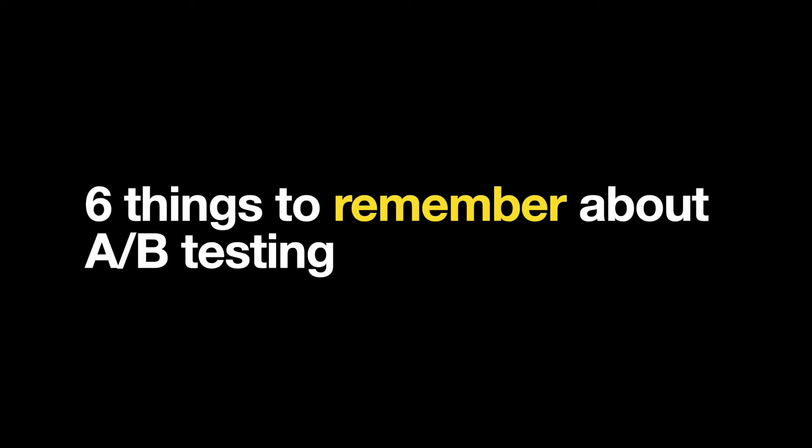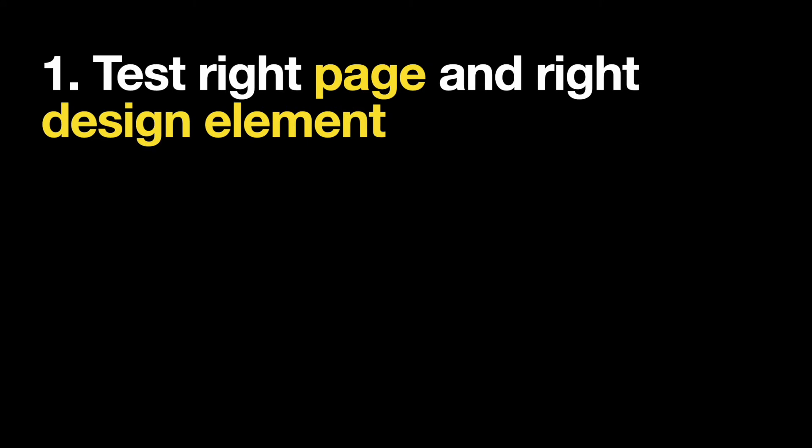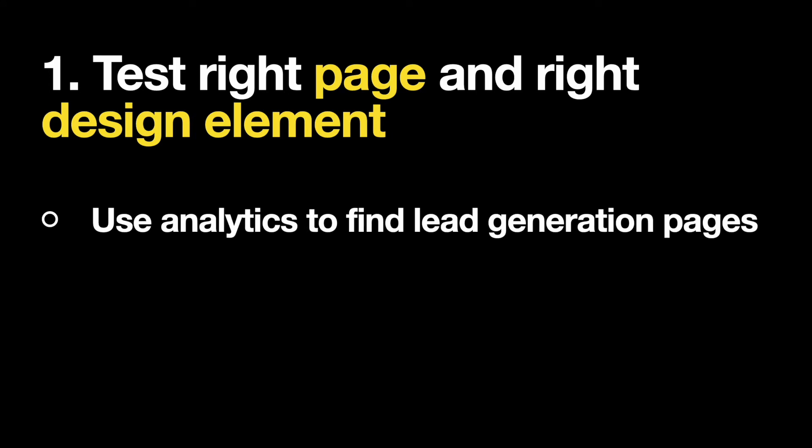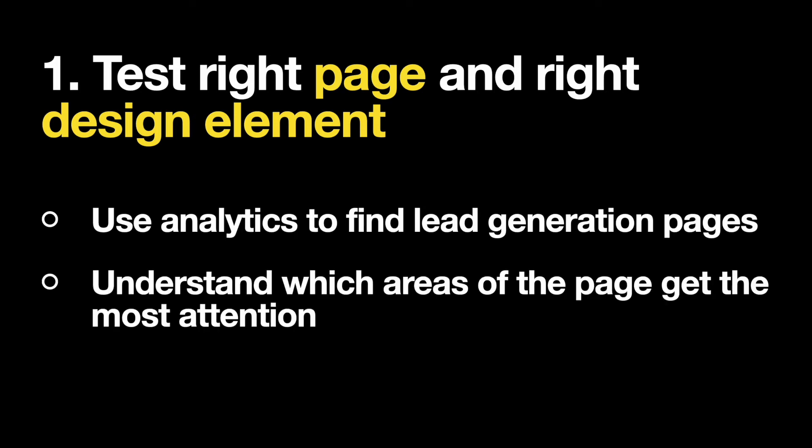Now let's talk about some things you need to take into account while conducting A-B testing. Number one: test the right page and the right design element. You need to conduct A-B testing for the pages where users convert. If most conversions happen on the home page, then that's where you need to conduct testing. You can use tools like Google Analytics to find key lead generator pages, and heat map tools available in Google Page Analytics or Hotjar to understand which areas of the page get the most traffic and which ones users ignore.